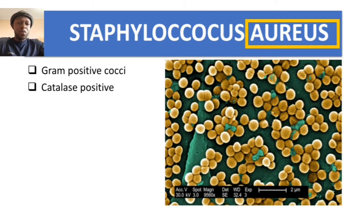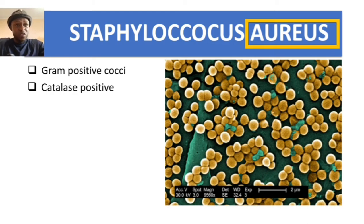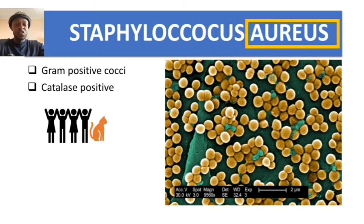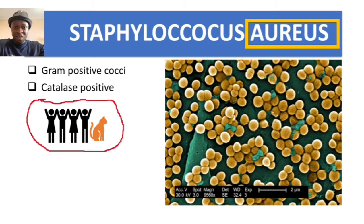All Staphylococcus species — Staph aureus, Staph epidermidis, and Staph saprophyticus — are catalase positive. Here's a mnemonic: imagine medical staff posing for a photo, and a cat gets into the picture without the cameraman noticing. That cat represents catalase. Staph aureus is differentiated from other staphylococcal species by being coagulase positive.